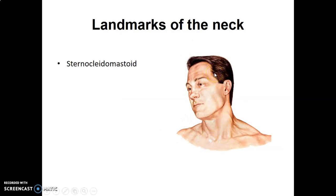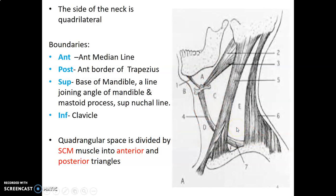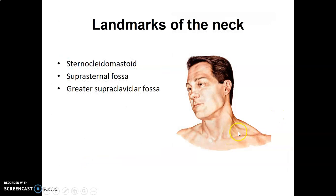When you look at the surface anatomy of the neck, the two heads of sternocleidomastoid are visible — the sternal head and the clavicular head. Then you have the suprasternal fossa, that's the fossa above the manubrium of the sternum. Then you have the greater supraclavicular fossa, the fossa above the clavicle. In males, the thyroid cartilage is usually very prominent anteriorly at the midline.